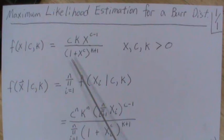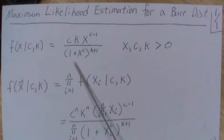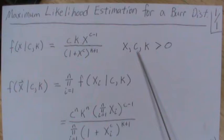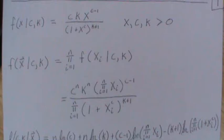Here's the density of a Burr distribution. C and K are the unknown parameters. X to the C minus 1, 1 plus X to the C, all raised to the K plus 1. The random variable and the parameters are all positive.